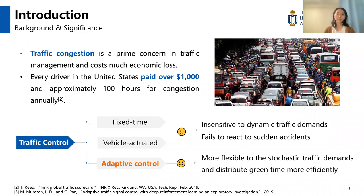For today, the most efficient way to deal with traffic congestion is to implement traffic signal control. There are three categories of traffic signal control: the first one is fixed time control, then vehicle actuated control, and finally adaptive signal control.